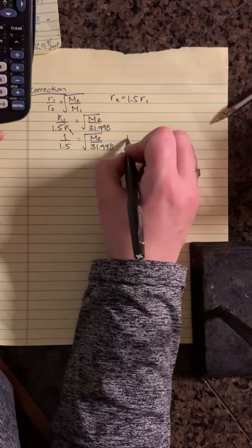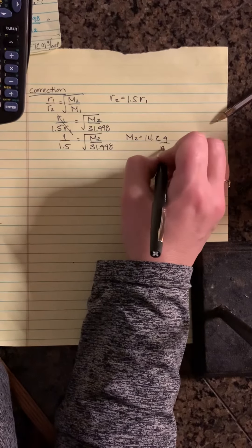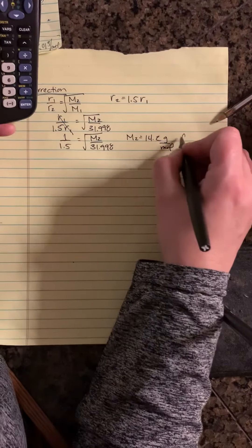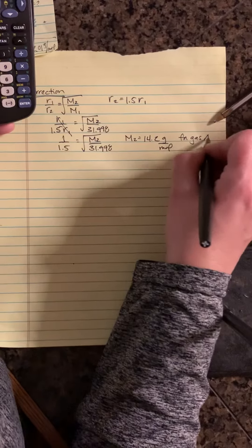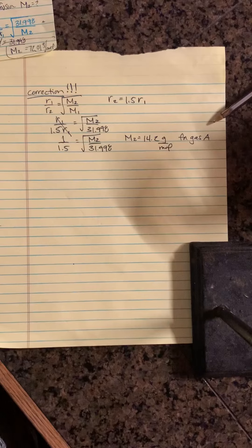Okay, great. So that comes out to be M2 equals 14.2 grams per mole for gas A. So this is a correction. Thank you.